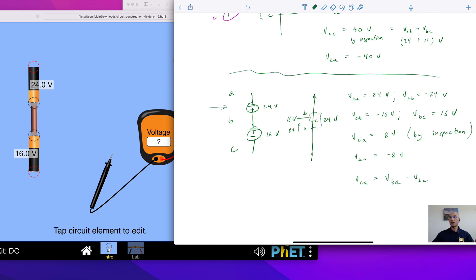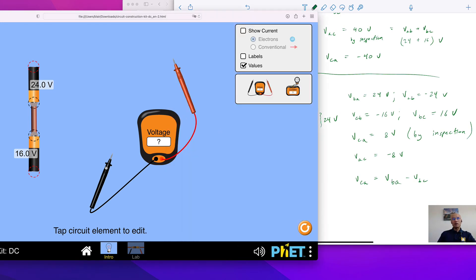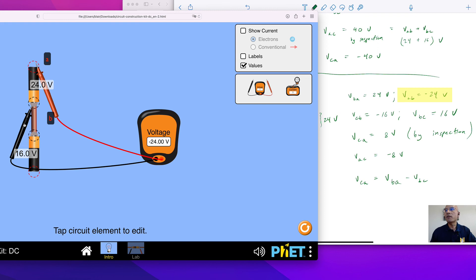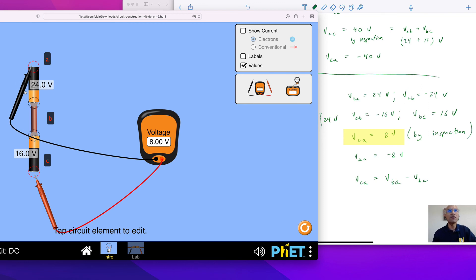And so let's just double check our work here. Coming back here, we have, let's measure VBA, so B reference to A, this is VBA, 24 volts. VAB, negative 24 volts. VCB, so here's B, and then C reference to that, negative 16, just like we wrote. And then VCA, so that means I move the black probe to A. VCA is 8 volts. VAC, we could swap these around, negative 8 volts.